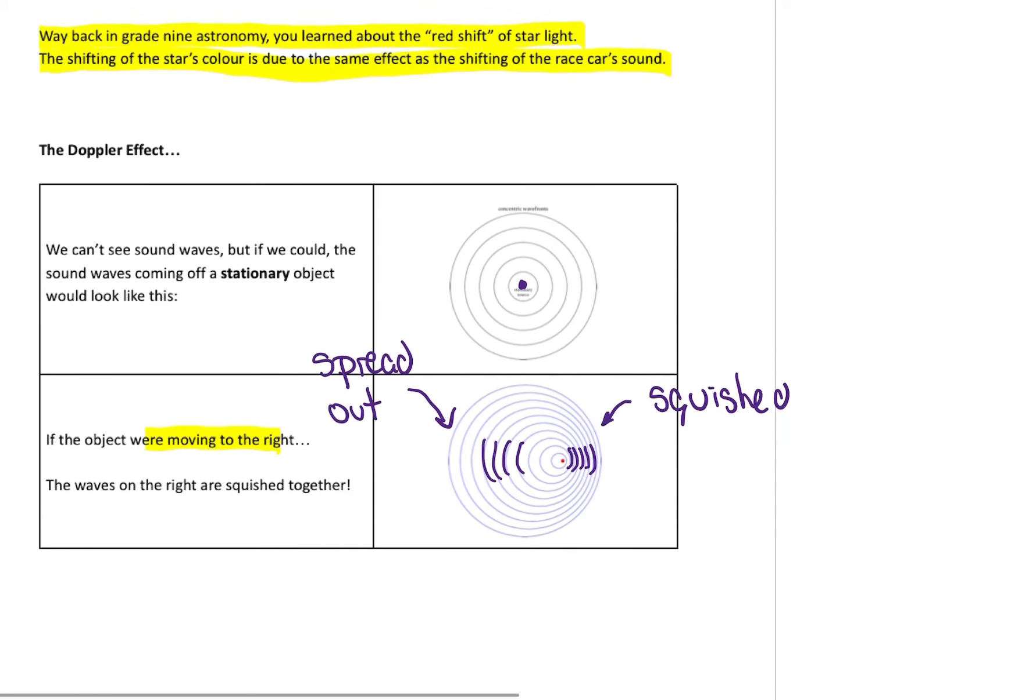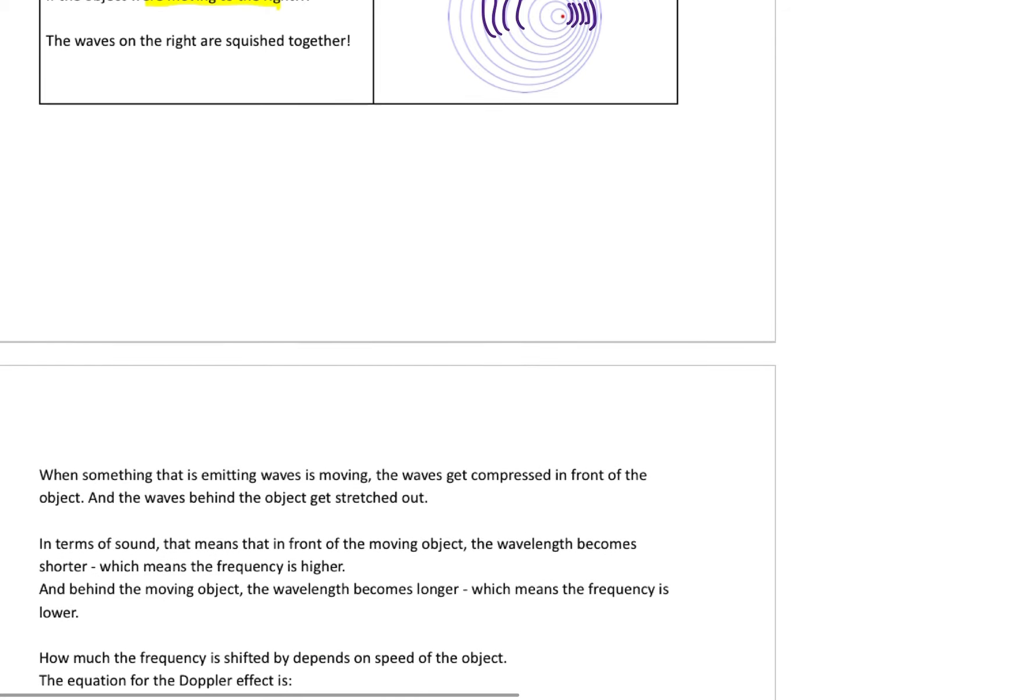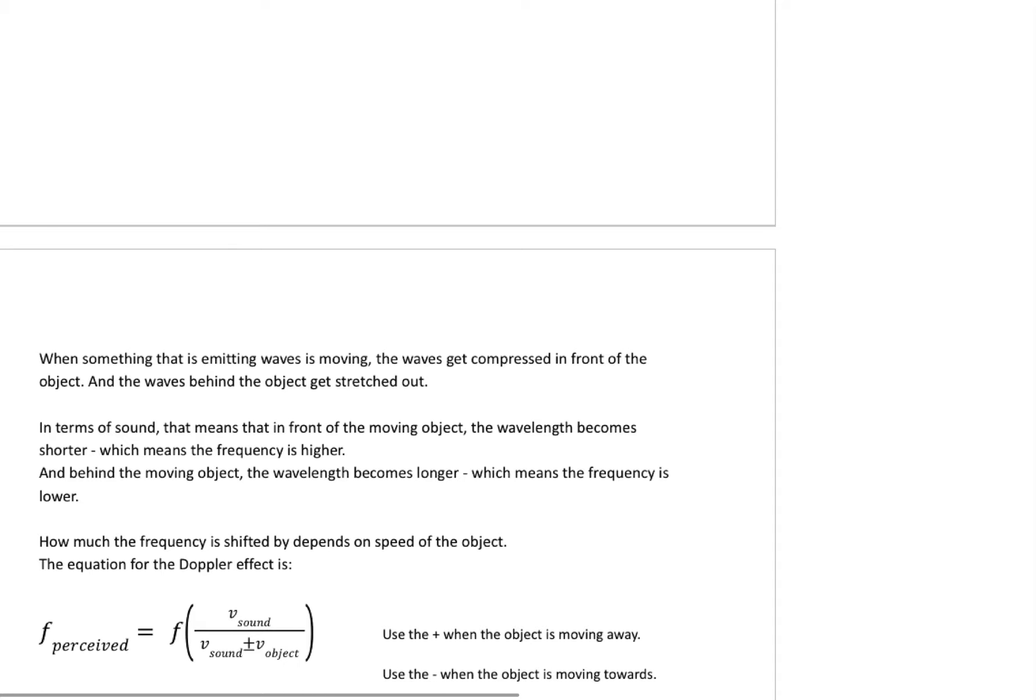As we've talked about in previous videos, when the waves are compressed, really what that means is it's a shorter wavelength. And shorter wavelength connects to a higher frequency, so if an object is coming towards you, those compressed wavelengths make a shorter wavelength, which means we hear it as a higher pitch.